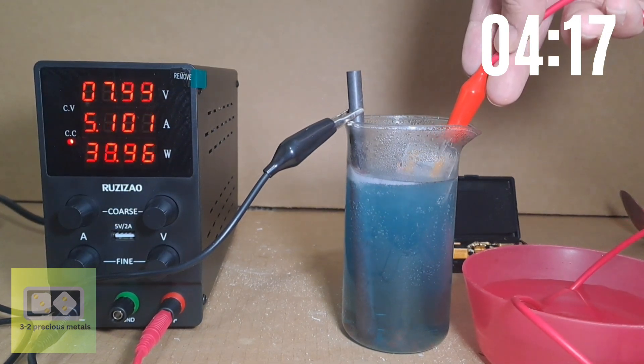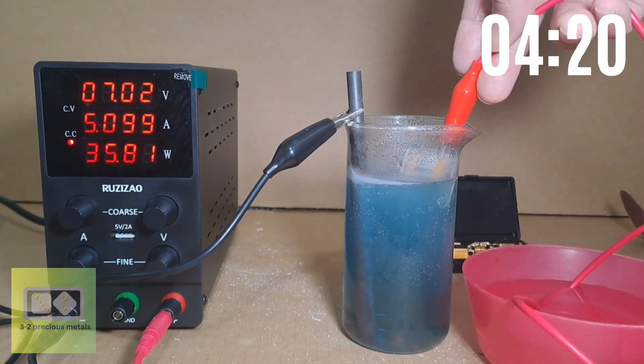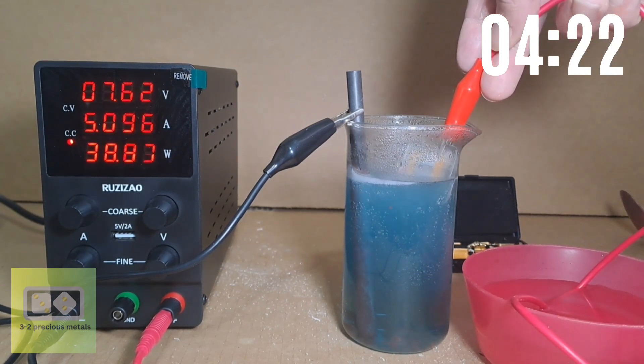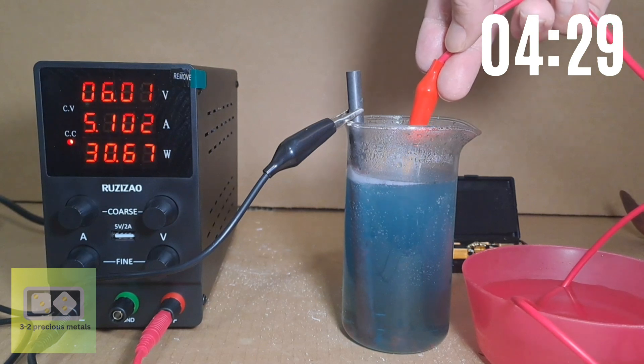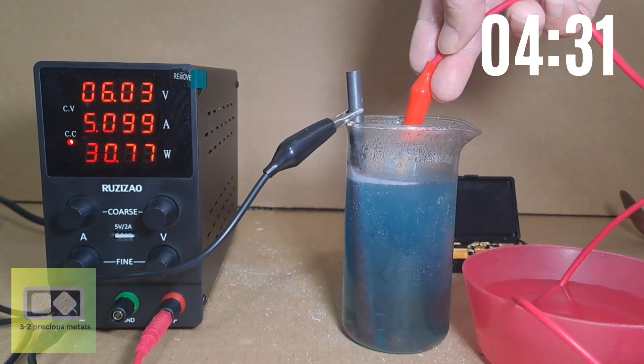Also, the electrolyte solution has turned a deep blue color. A blue-colored solution usually means that there is copper in solution. If you look closely at the cathode, you will notice there is a large amount of copper being deposited there.